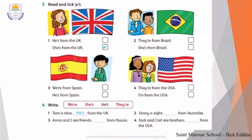Let's open our book and start solving this sheet. Read and tick — we have to tick the correct answer. They did the first one for you: 'He is from the UK' or 'She is from the UK.' The correct answer is the second one, because she is a girl. We cannot say 'he is.'